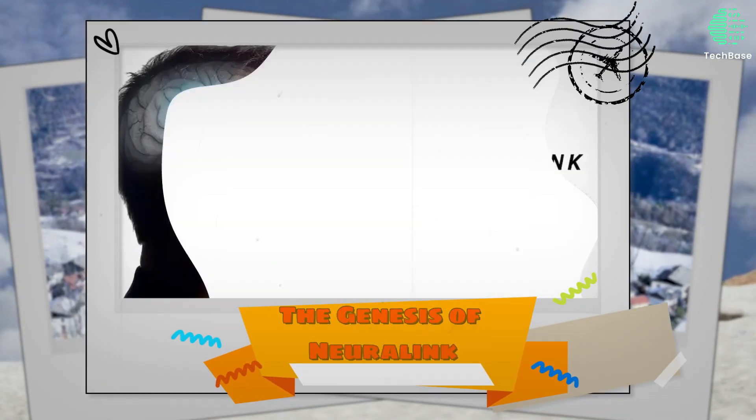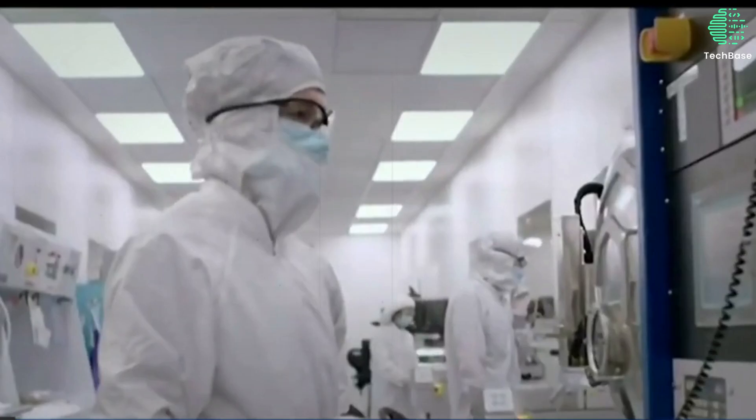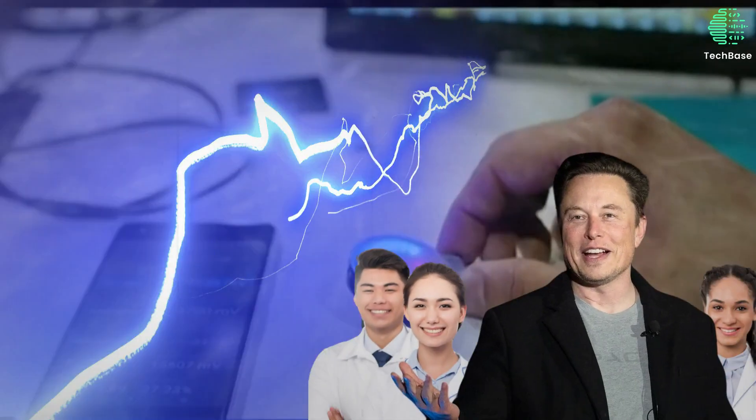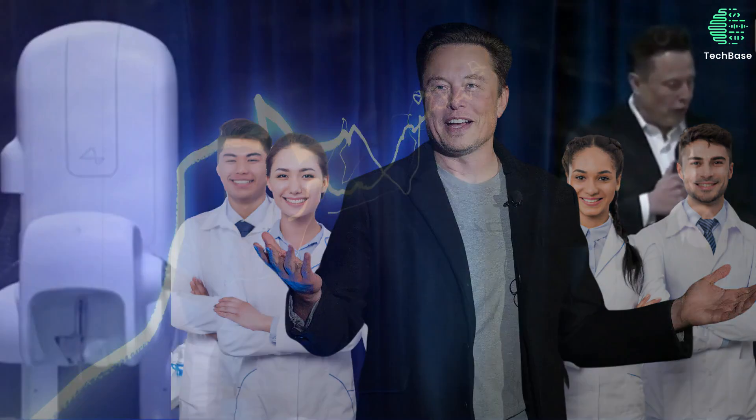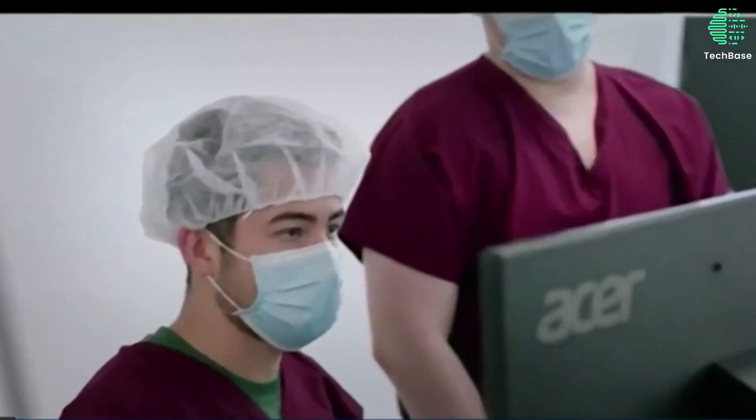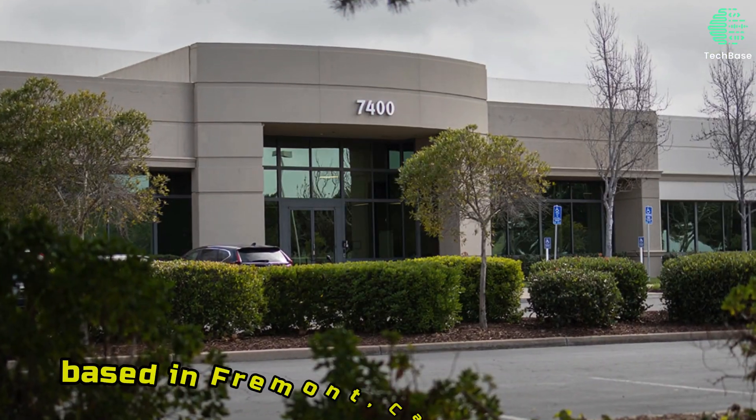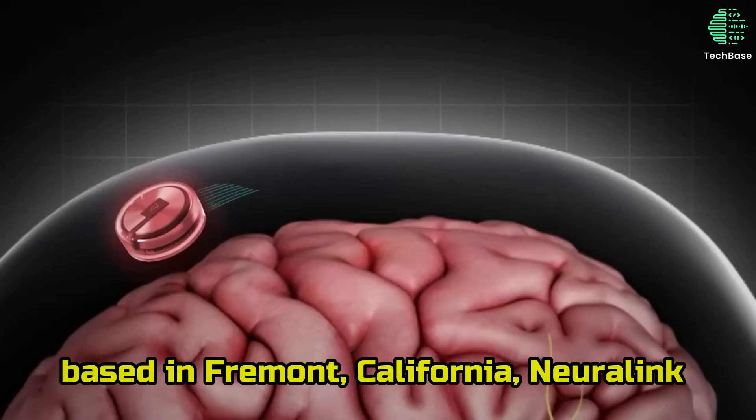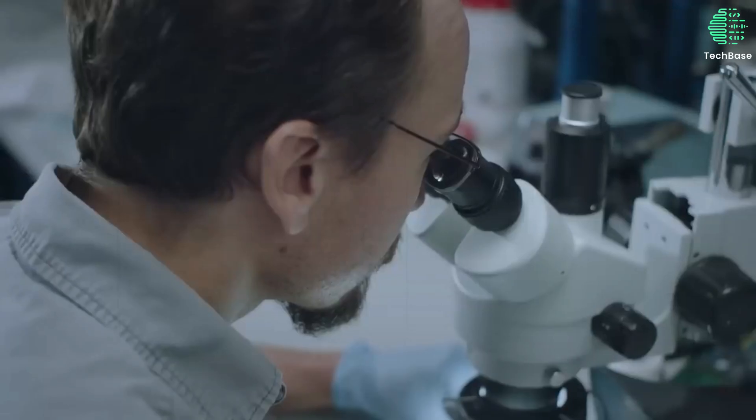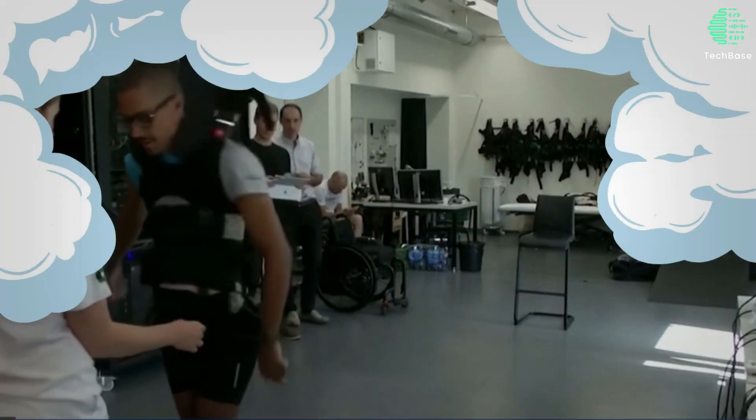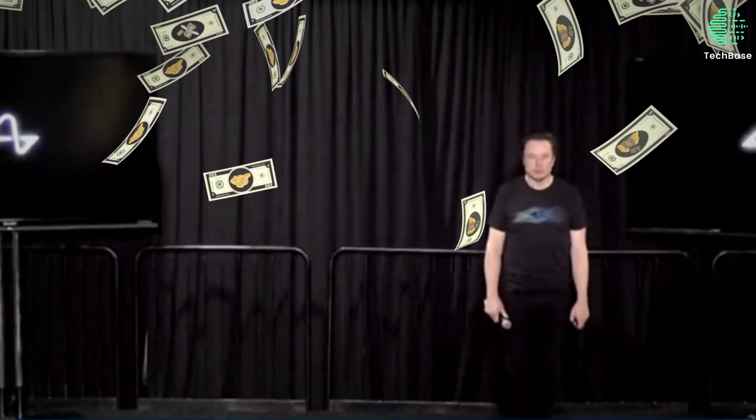The Genesis of Neuralink. Neuralink, a pioneering neurotechnology company, emerged onto the scene in 2016 under the visionary leadership of Elon Musk and a team of accomplished scientists and engineers. With its headquarters based in Fremont, California, Neuralink swiftly captured global attention with its ambitious mission to develop implantable brain-computer interfaces, BCIs. Since its inception, the company has attracted top talent from various universities and received substantial funding, including a notable investment from Musk himself.